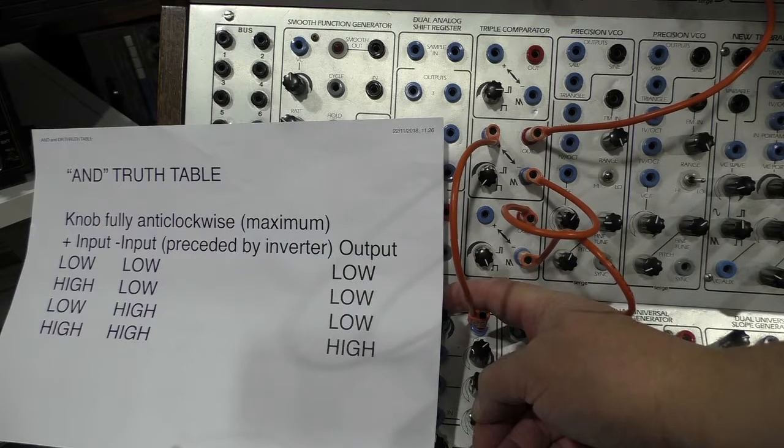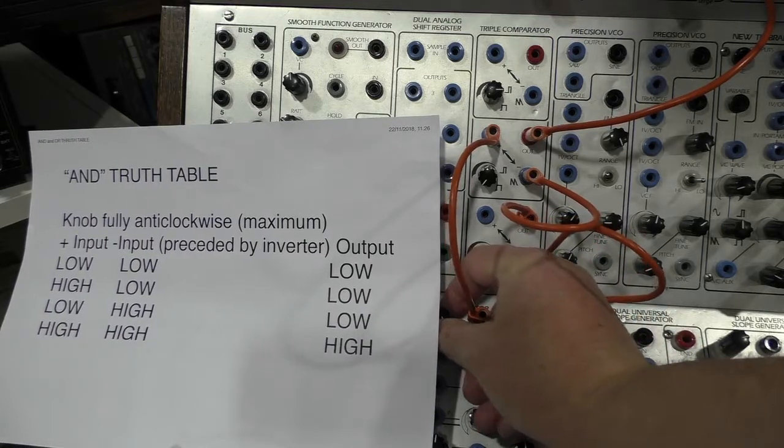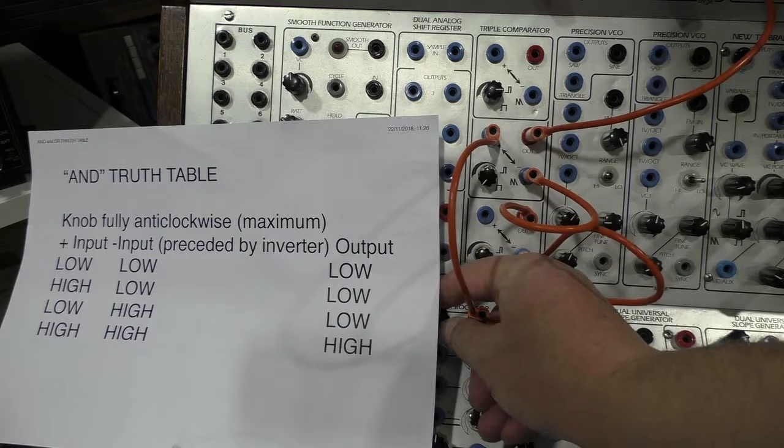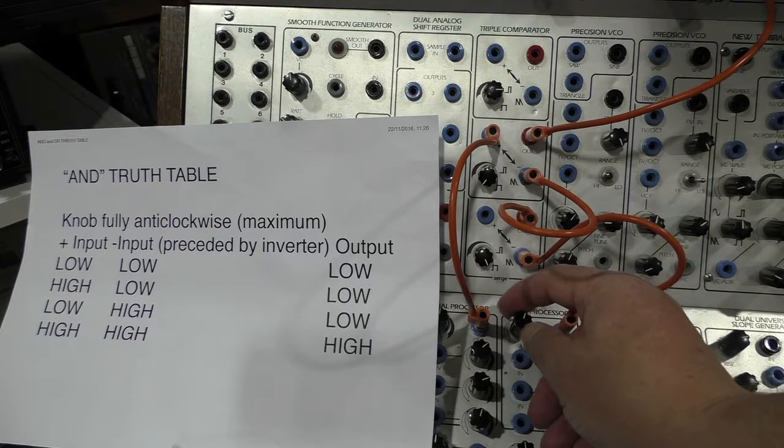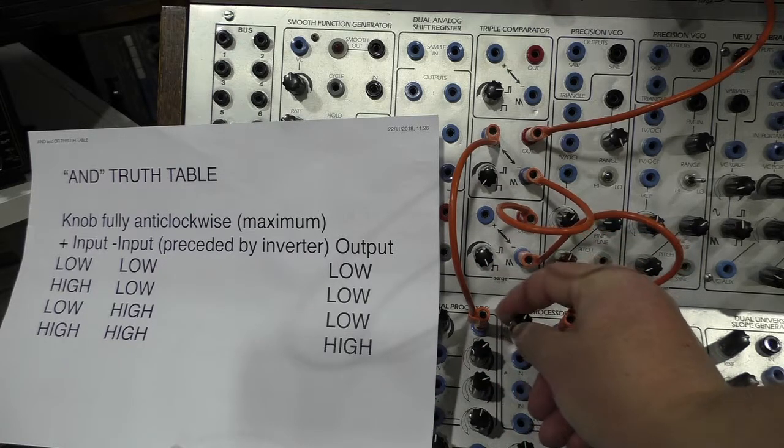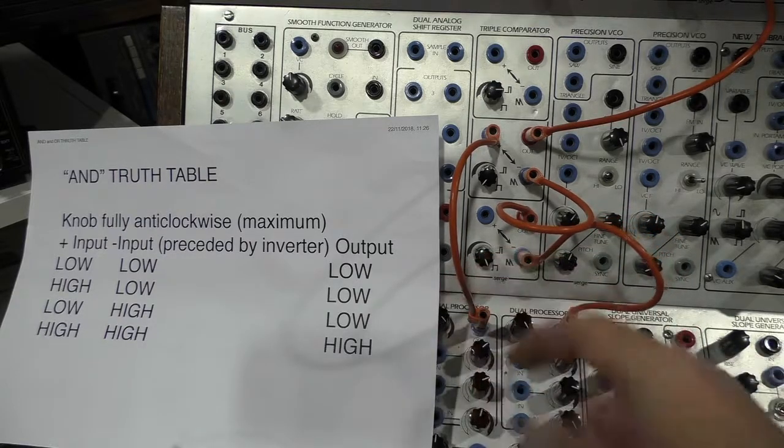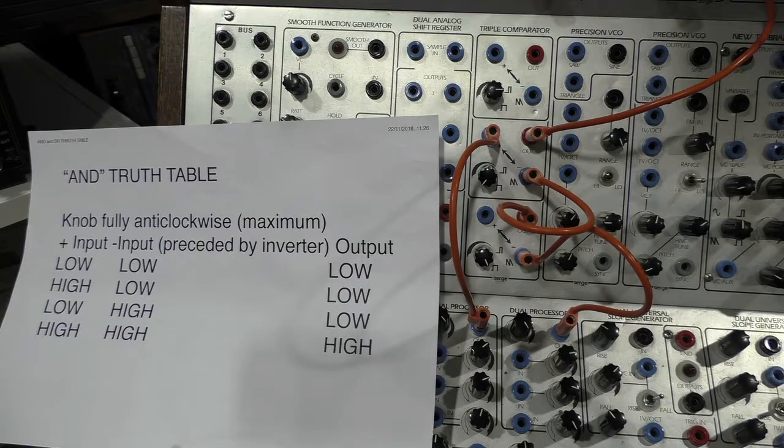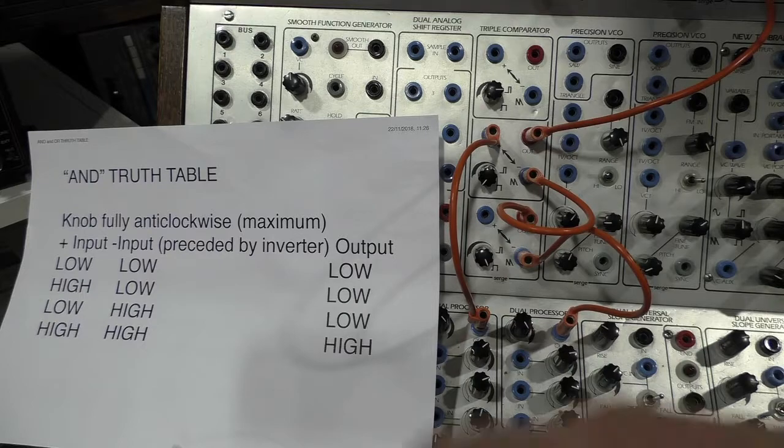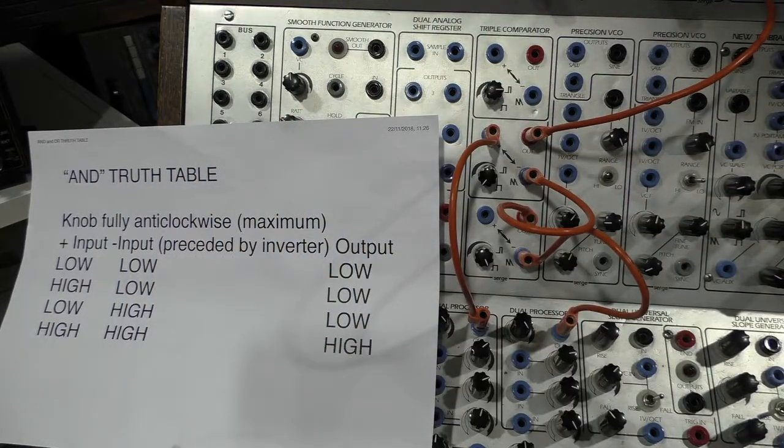Then a low and a low produces a low at the output. A high and a low produces a low at the output. A low and a high produces a low at output. But two highs at the input produces a high on the output. And we've created our AND truth table. This is not correct though. It says anticlockwise maximum, it should be clockwise.